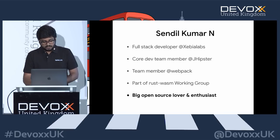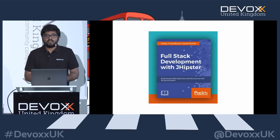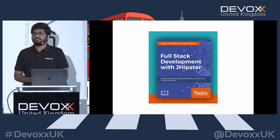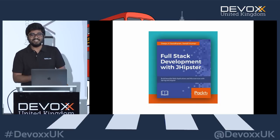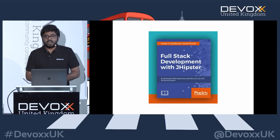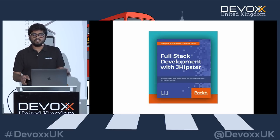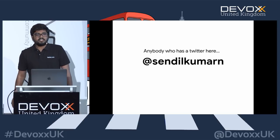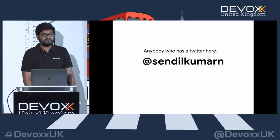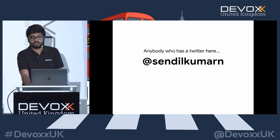I tend to contribute to many open source projects. I also authored a book on full-stack development with JHipster, where we describe everything you need to know as a full-stack developer and how to migrate from monolith to microservices. If you're interested, you can buy it. You can also reach me on Twitter at SandeelKumaran for any questions regarding JHipster or open source projects.